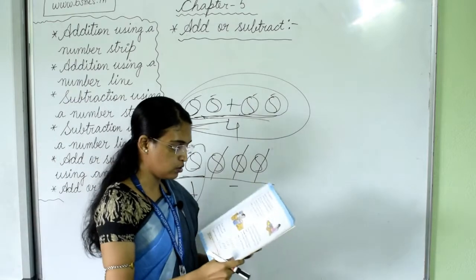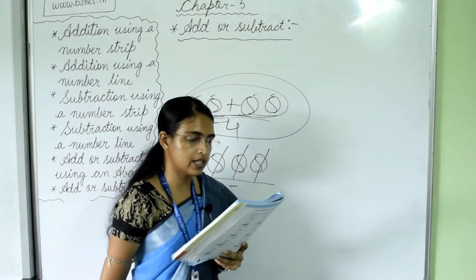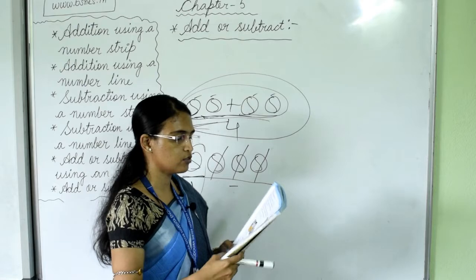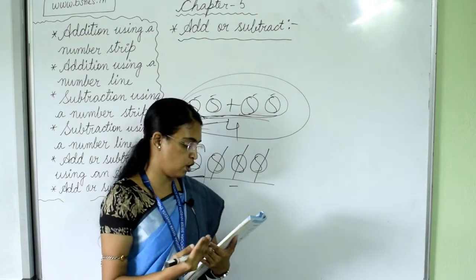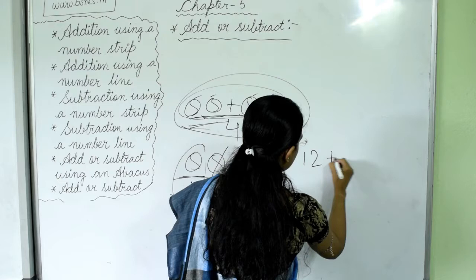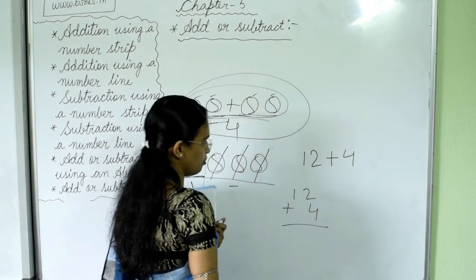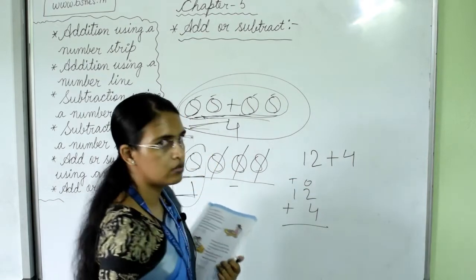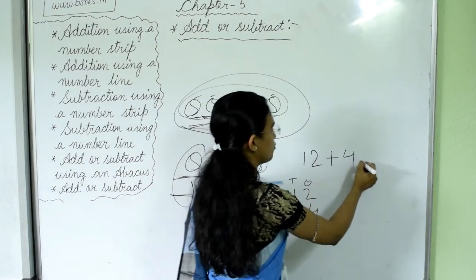Now we find out which operation to use from story sums. First question: there are 12 pencils in a box and 4 more pencils are added — that means addition. So 12 plus 4: add ones place first, 4 plus 2 equals 6, and carry 1 in tens place. So 12 plus 4 equals 16.